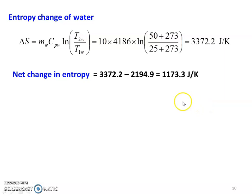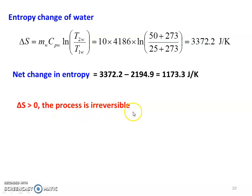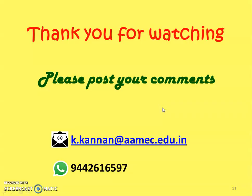Since delta S is greater than 0, the process is irreversible. Thank you for watching. We will meet again in the next video lecture, solving additional problems on change in entropy from the Anna University question paper. Until then, bye.